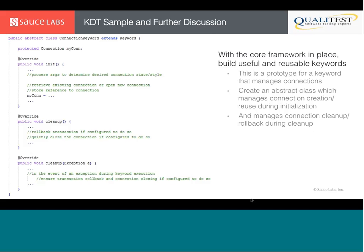You would never use this connection keyword directly as part of a test script. Instead, you'd write another keyword — such as 'run this report out of the database and process the results' — which extends the connection keyword. You don't have to worry about any of those connection management details; you can have connection cleanup, quietly closing connections, or rolling back transactions as part of the cleanup routine. But you don't have to worry about all of that when it comes time to do your real work.